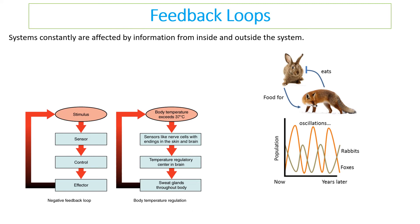Systems are constantly affected by information inside and outside of them. For example, body temperature: if your body temperature goes above 37°C, your thermoregulatory centre in the brain detects it and causes sweat to be released, which lowers body temperature back down. Detecting an increase and then causing a decrease is called negative feedback.